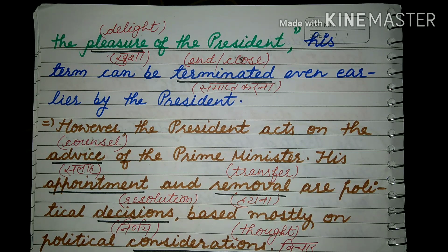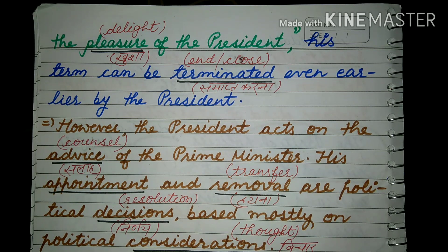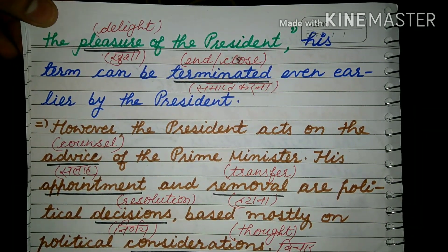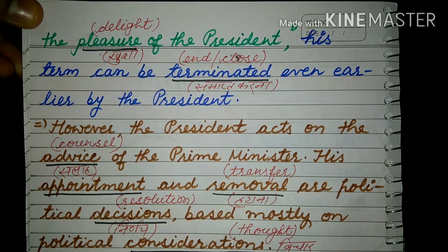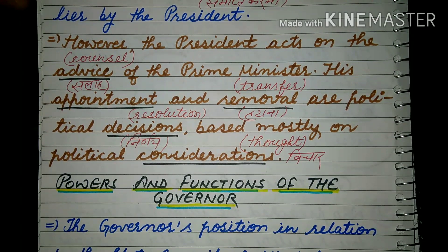अगर वो President को पाया गया कि वो किसी profit के लाभ पर है, तो his term can be terminated — उसका कार्यकाल समाप्त किया जा सकता है. However, the President acts on the advice of the Prime Minister. इस प्रकार जो President होता है — किसी Governor को advice देना, terminate करना, उसको हटाना — वो Prime Minister की advice या council पर करता है. His appointment, removal, and transfer are political decisions based mostly on political considerations.